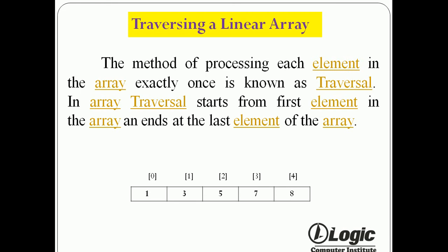In array, traversal starts from the first element in the array and ends at the last element of the array. In the diagram, first access the first element 1, then 3, then 5, then 7 and 8. One by one processing each element in the array.